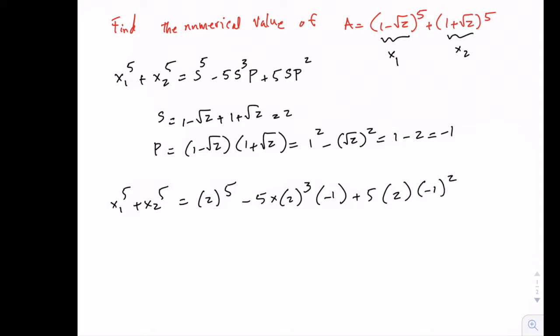And this is 32, this is 8, so actually plus 40 because this and this will cancel, plus 10, which gives us 72 plus 10, which is 82.